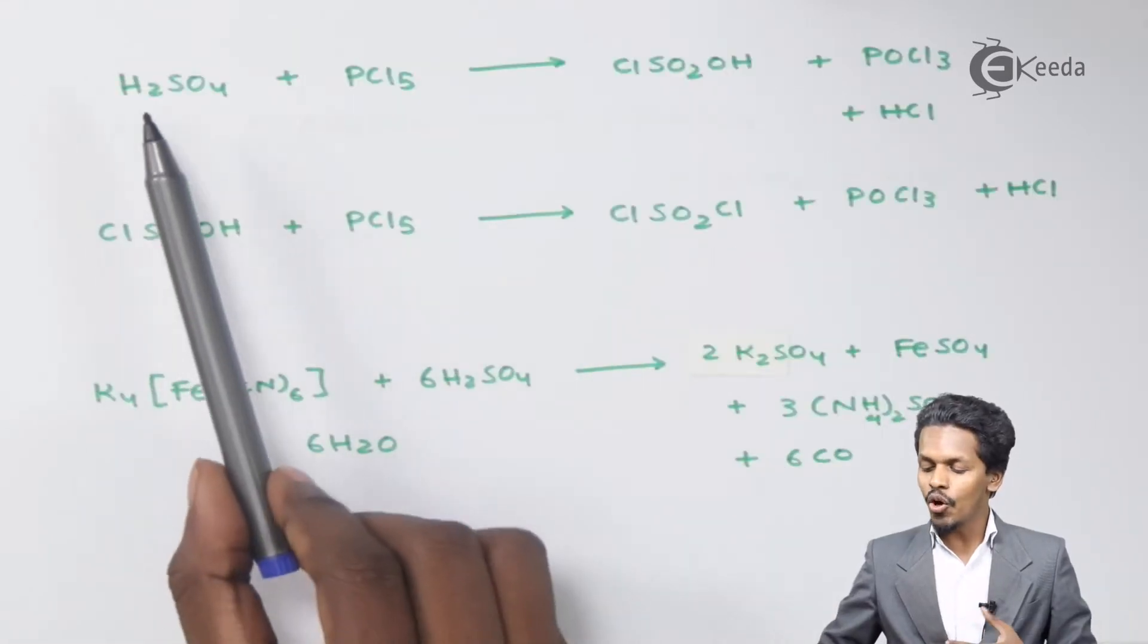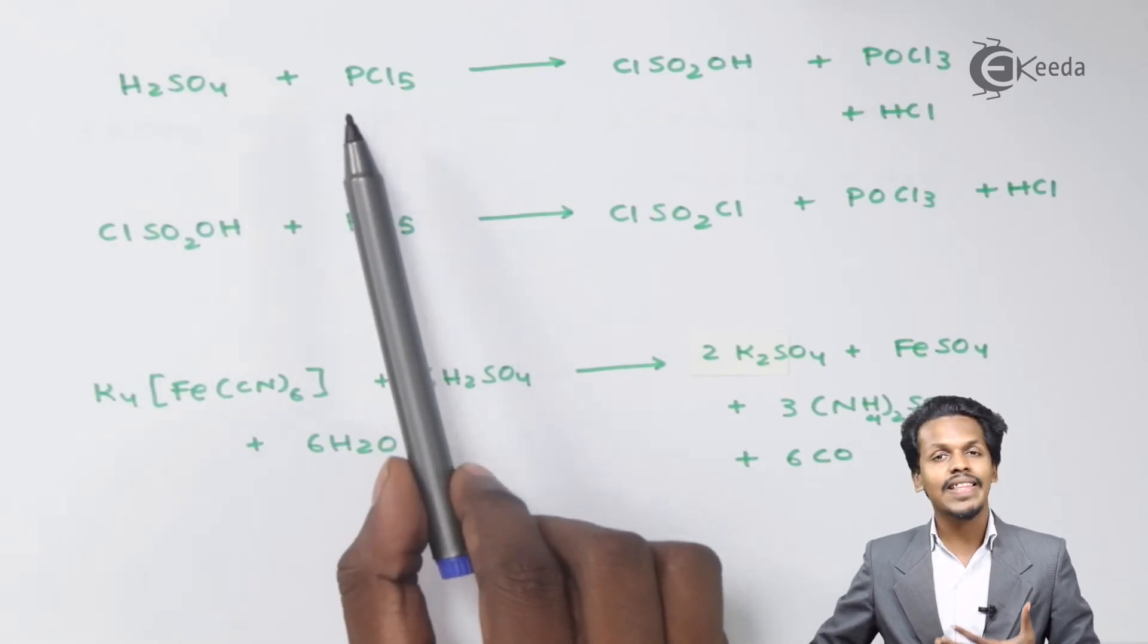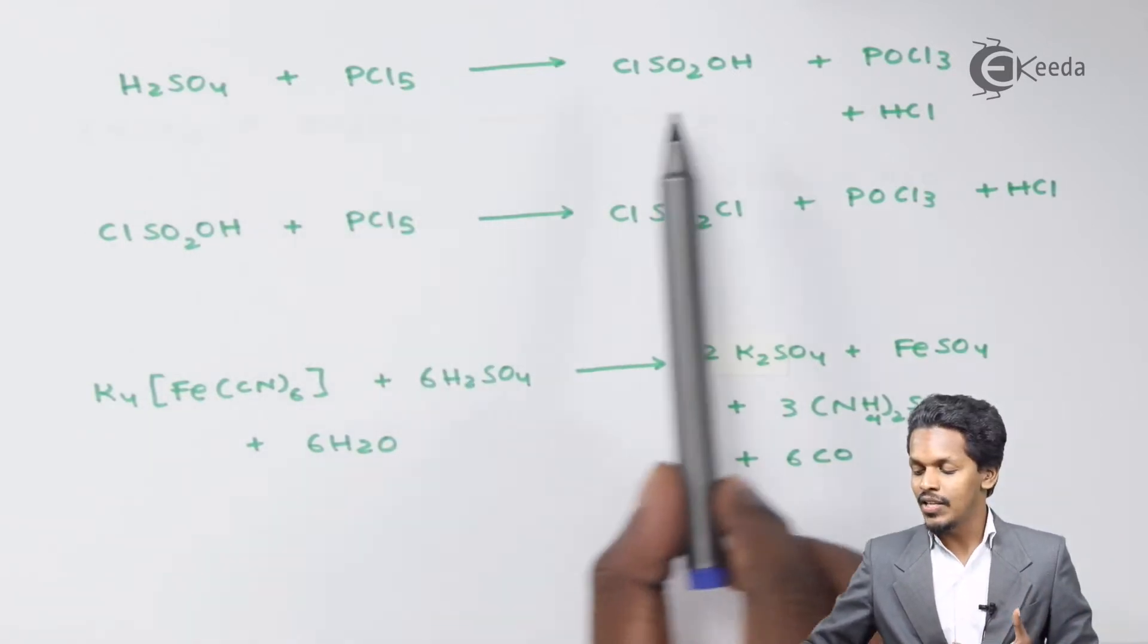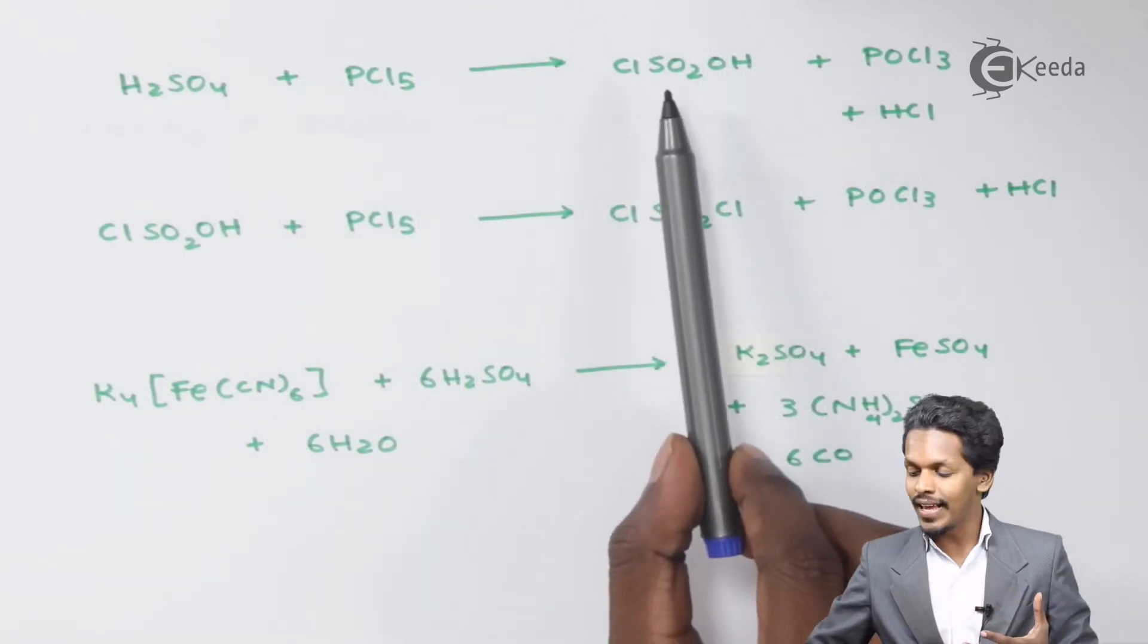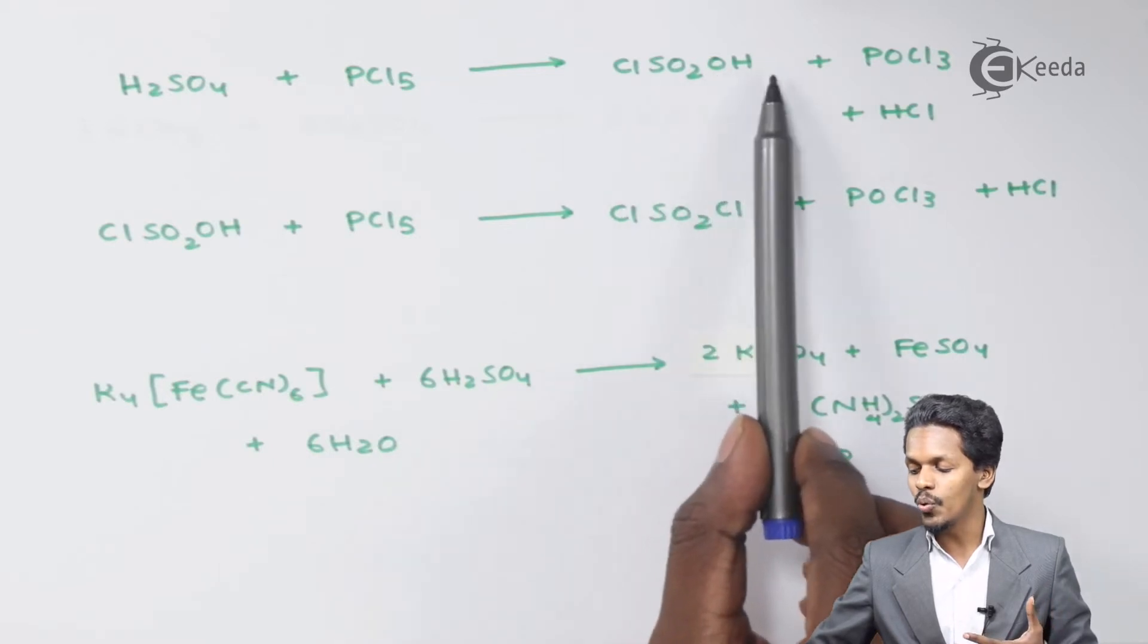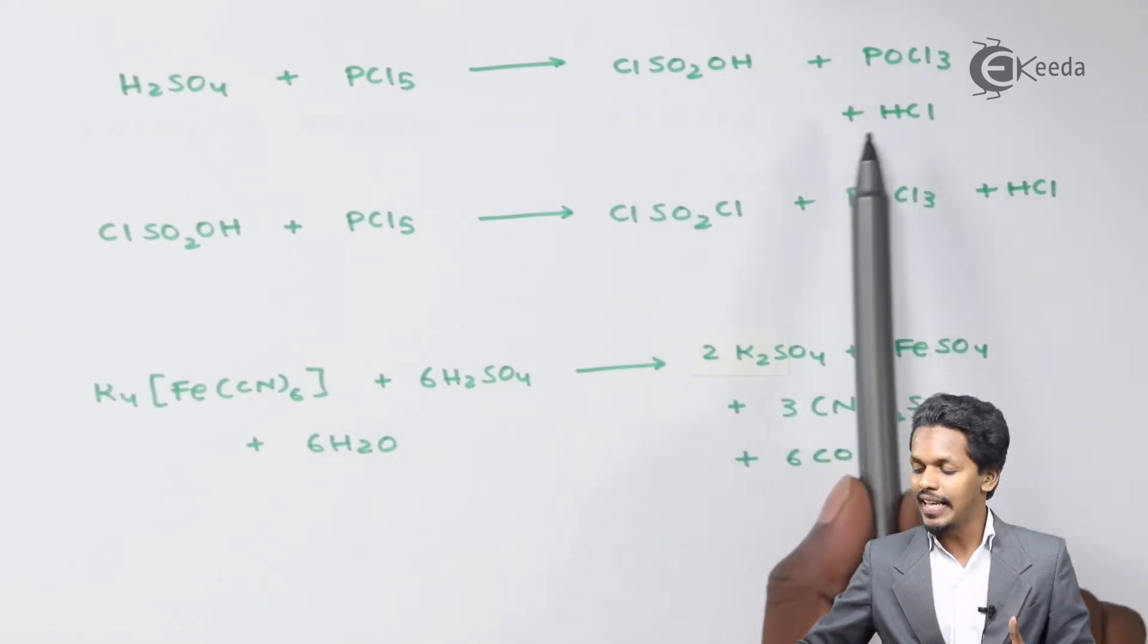The next is the action of H2SO4 on PCl5, that is phosphorus pentachloride. It will form chlorosulfuric acid, ClSO2OH, along with POCl3 as a byproduct.